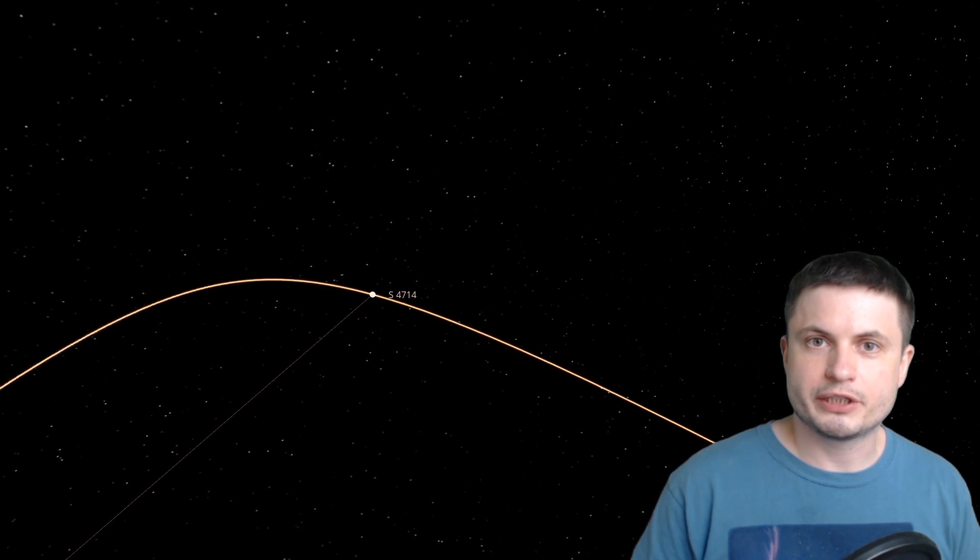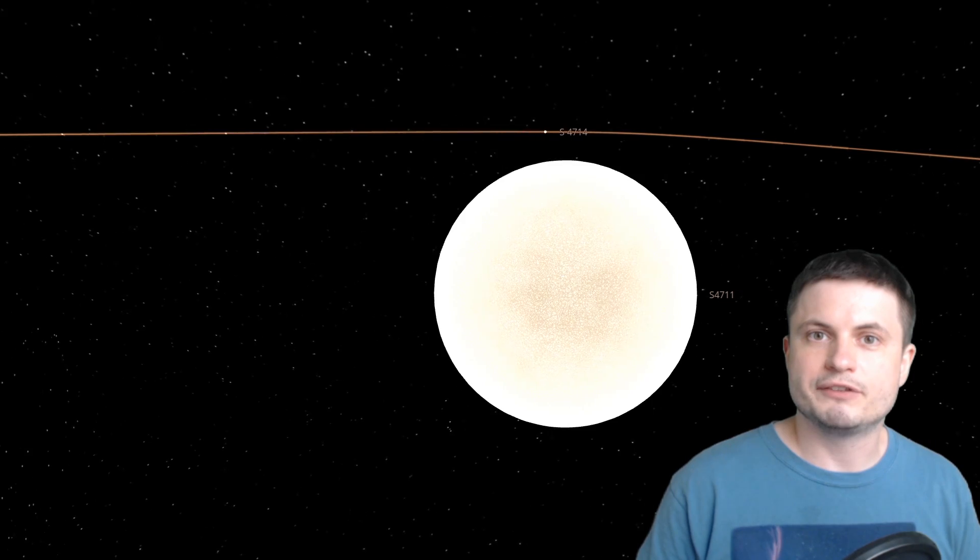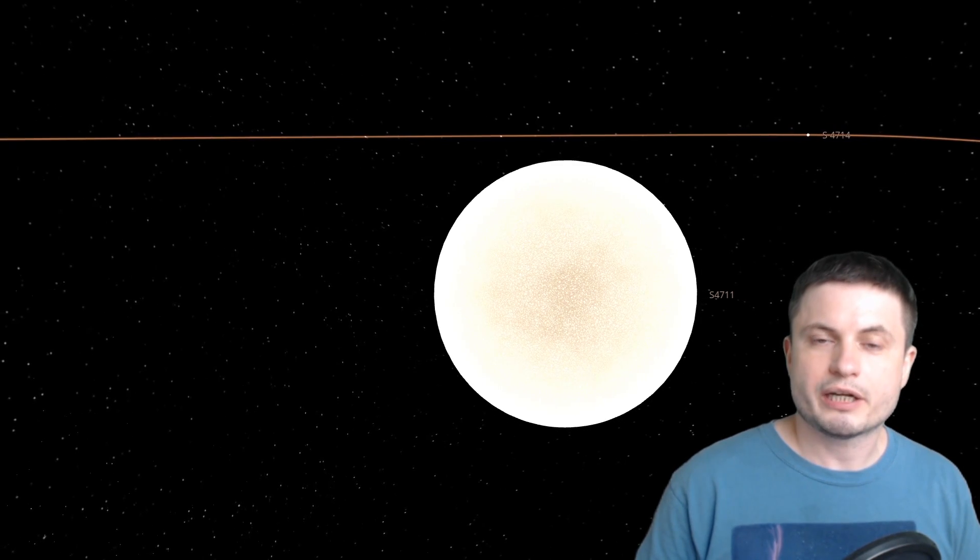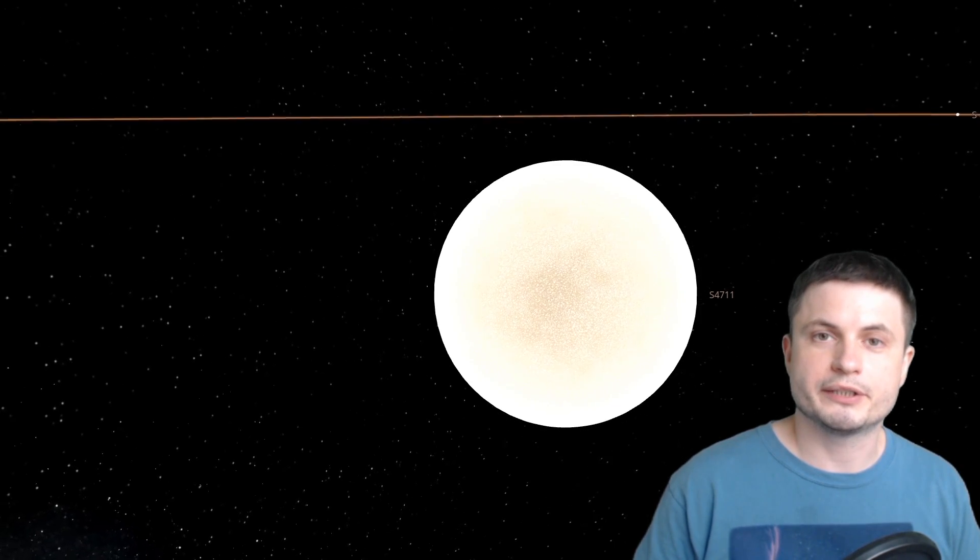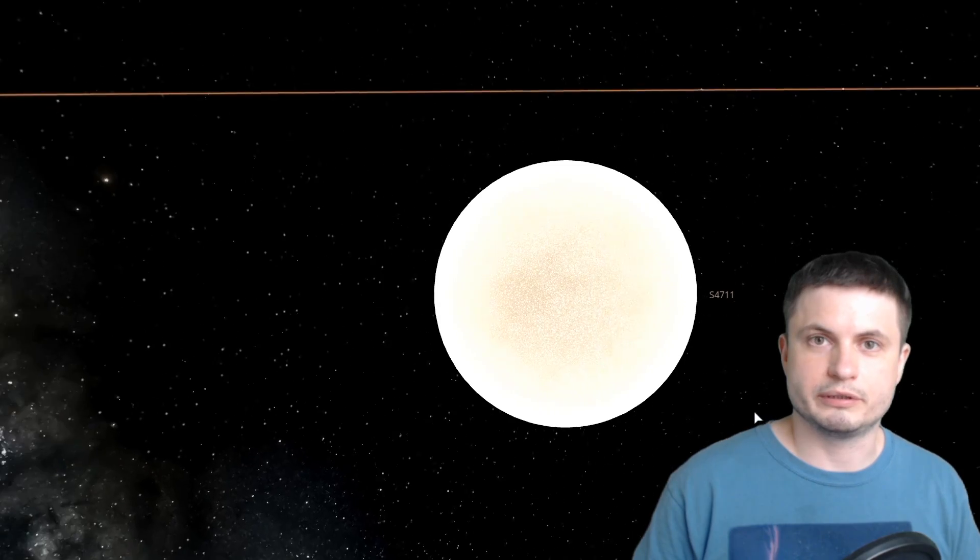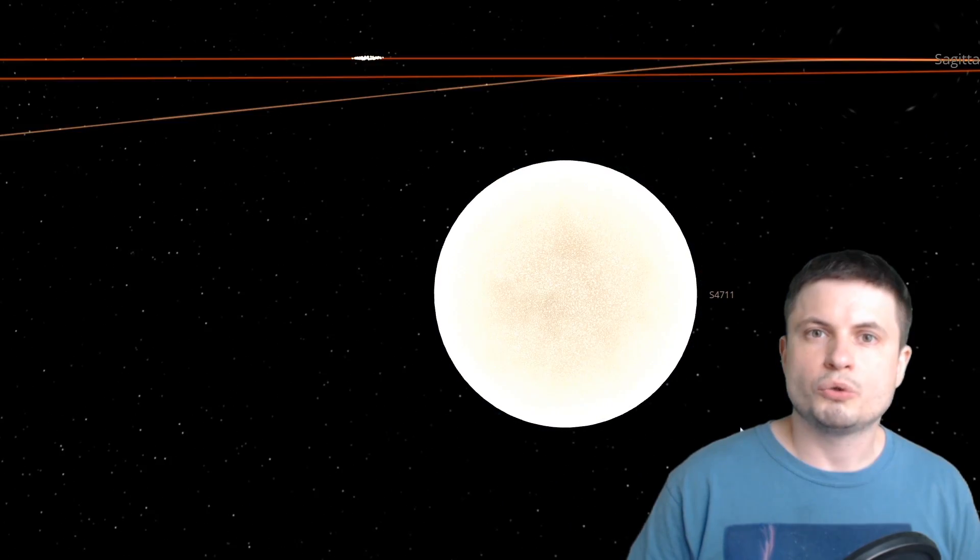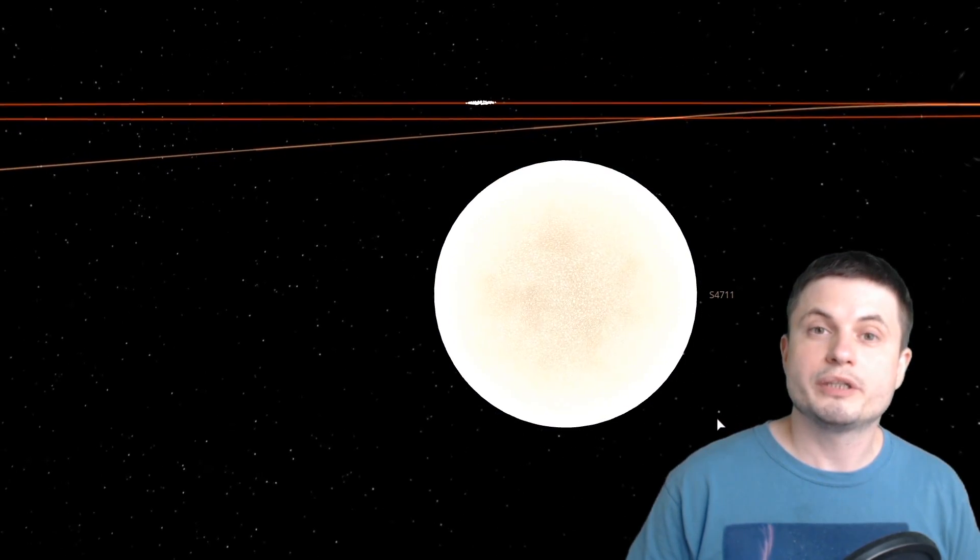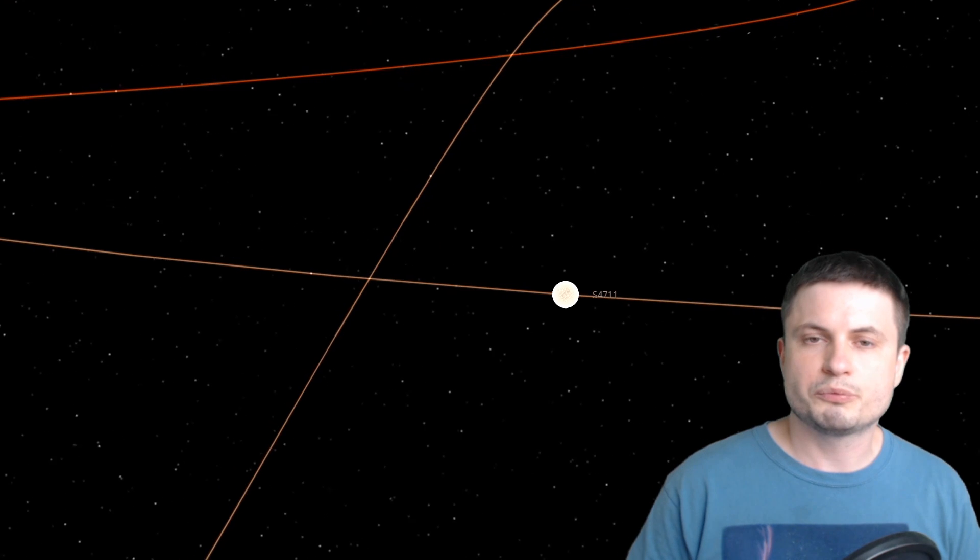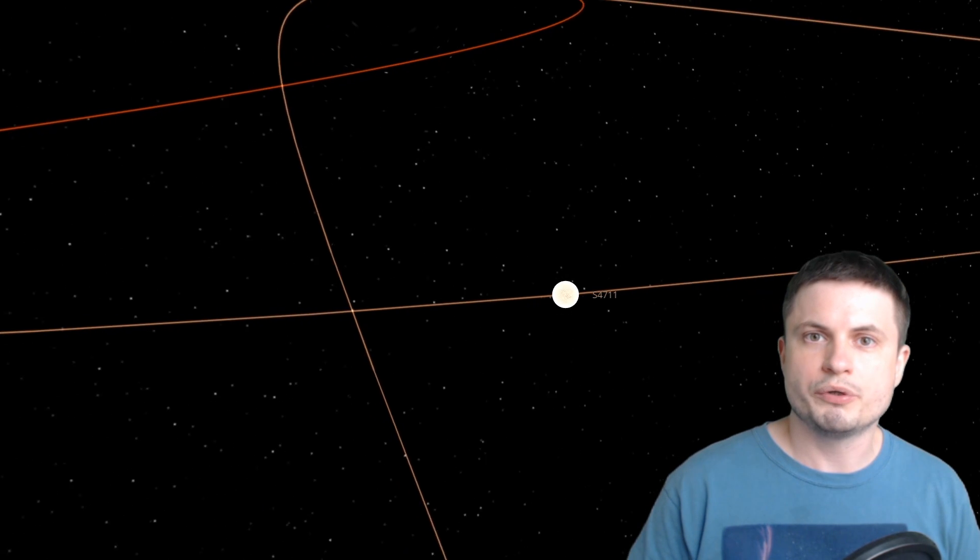But the other star that was discovered here, known as S4711, seems to be the record holder for the shortest period. The single year here, or the single orbit around the black hole, only takes the star about 7.6 years. So this means that we're going to be able to observe this star going around the black hole every 7.6 years, and because we know its orbit and its other parameters, it's going to be very easy for us to study other effects in this region now. But the other important question here is, are these squeezers different from typical stars, from other S stars in the region?